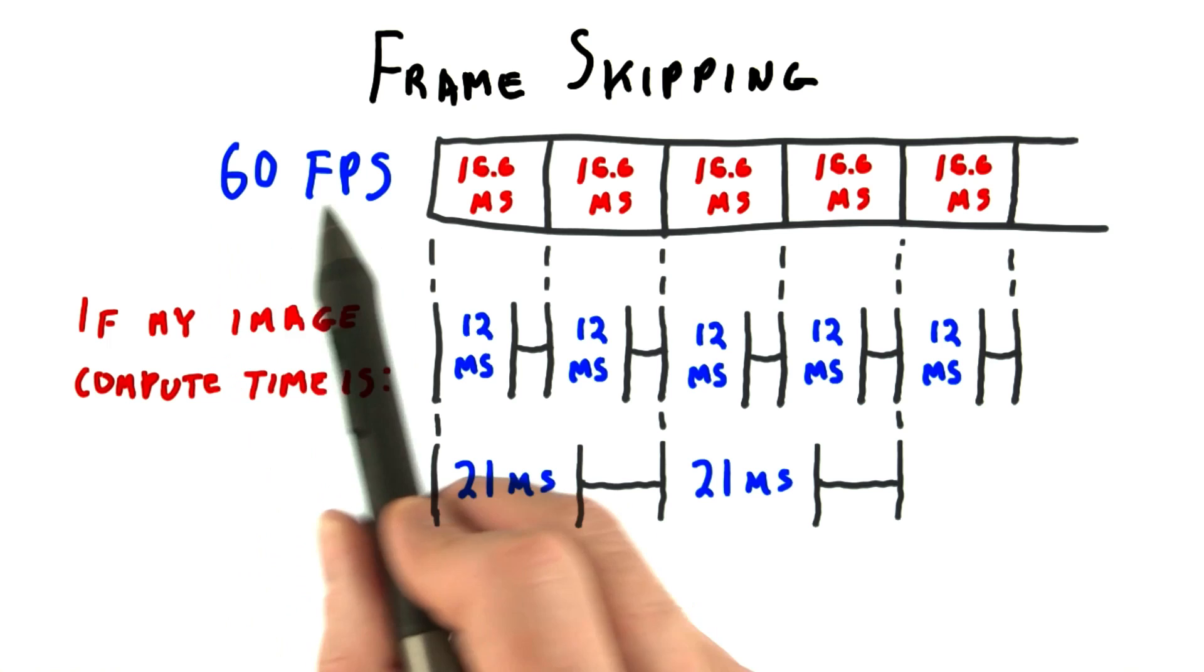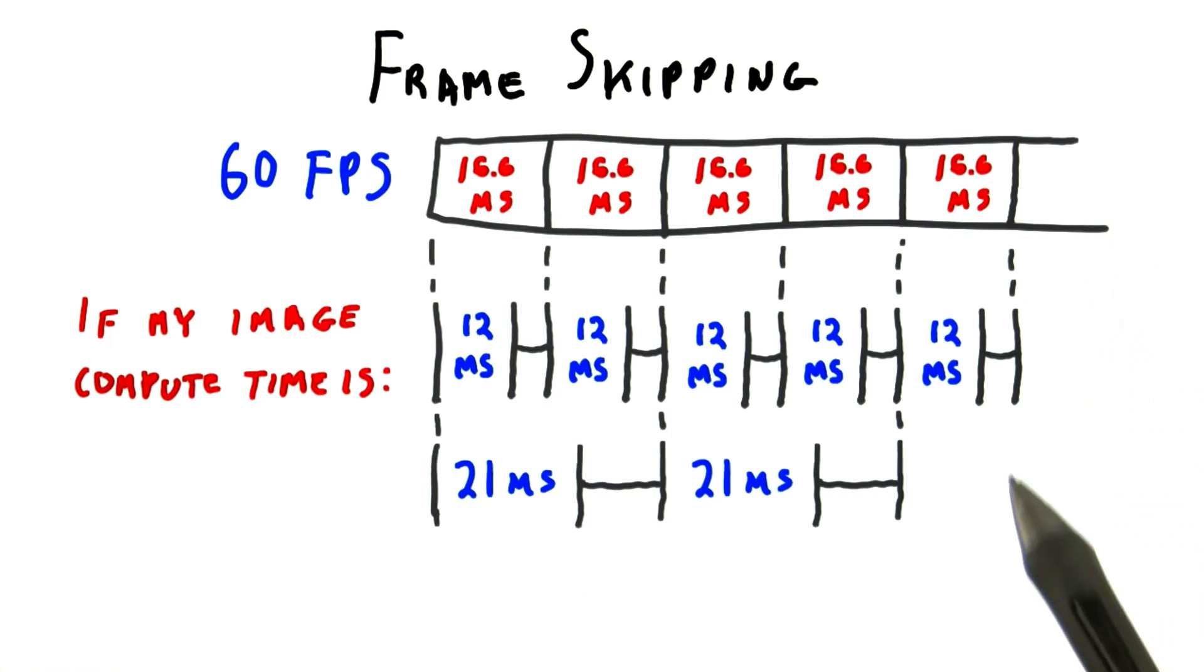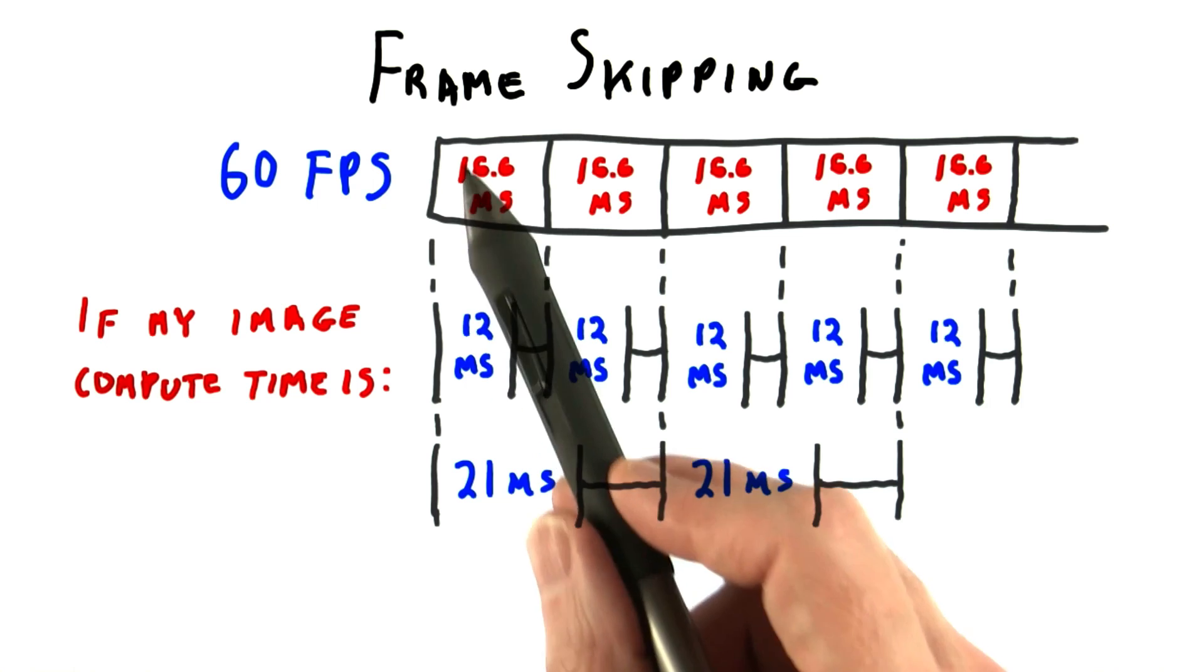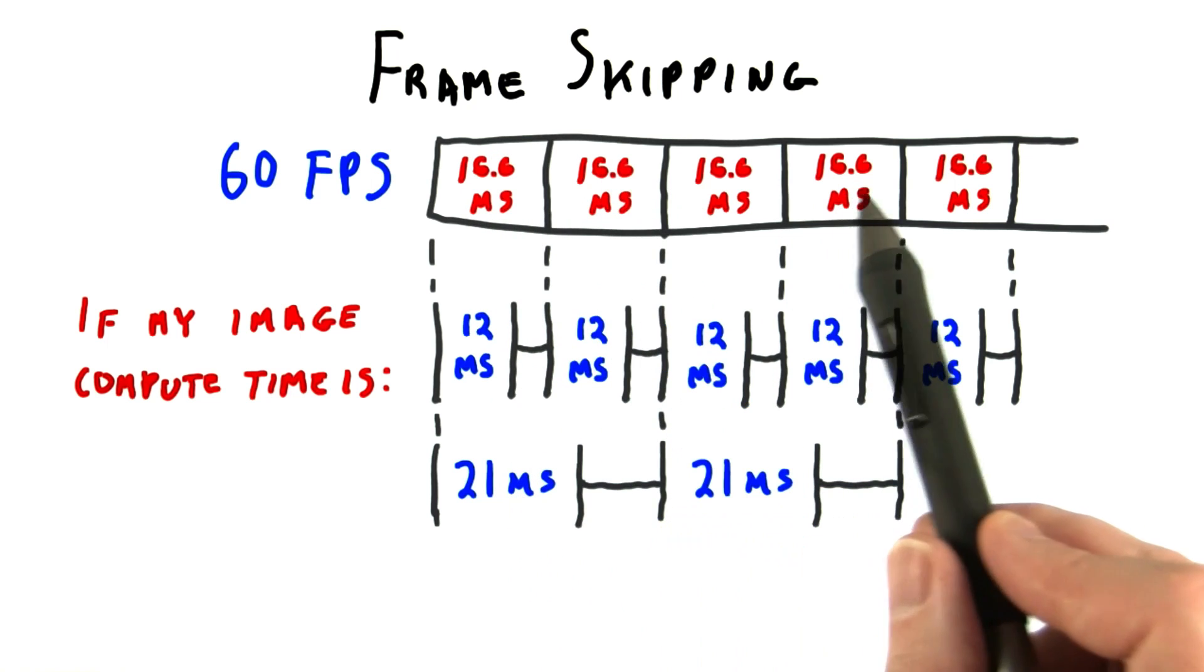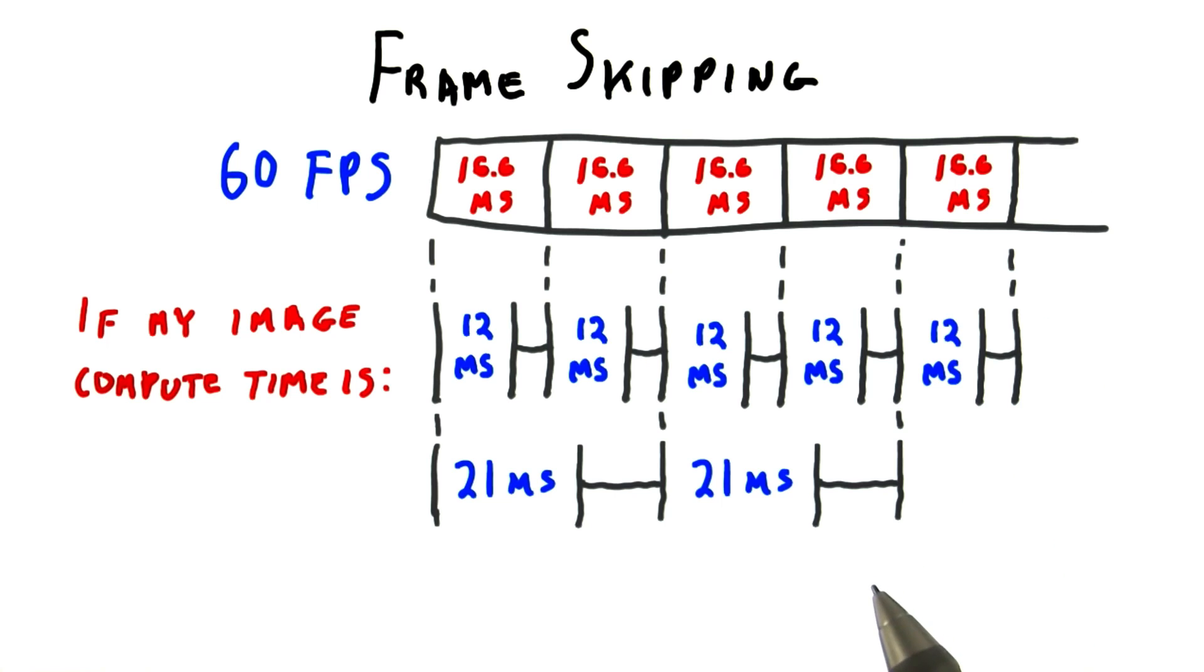The fastest we can display frames is 60 frames per second. So as soon as an image takes more than 1/60th of a second to compute, it will miss the first frame. This makes the effective frame rate 30 frames per second, since only every other frame is updated with a new image.